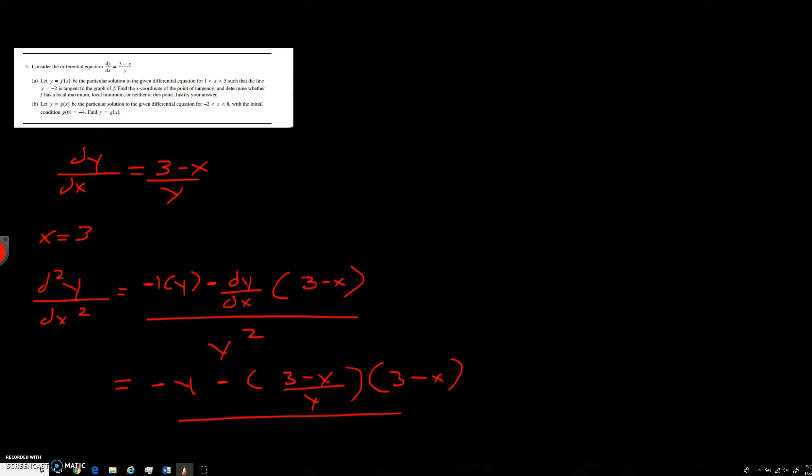So now we need x and y. We know x is 3. It says it's tangent to it, so it's going to be the point 3, negative 2. So we're going to plug in 3, negative 2.